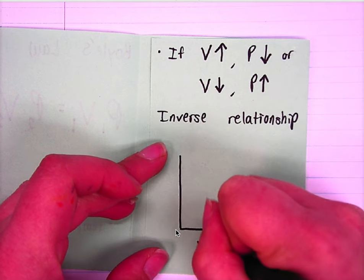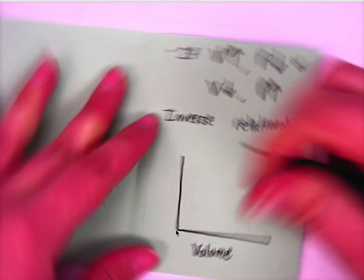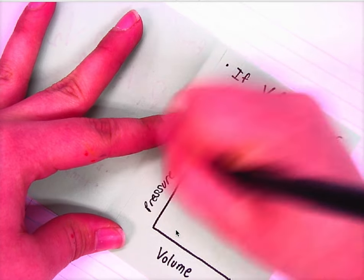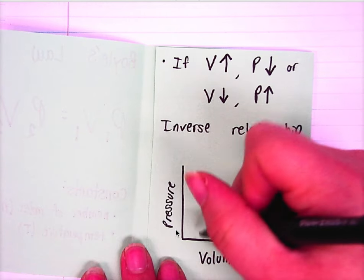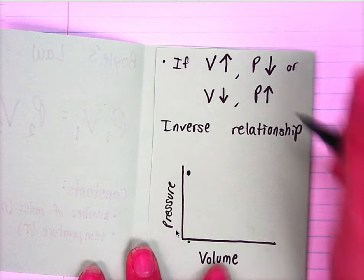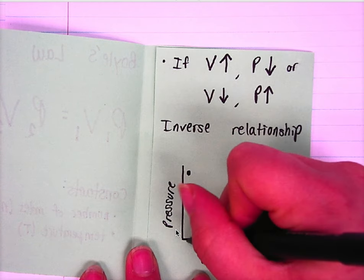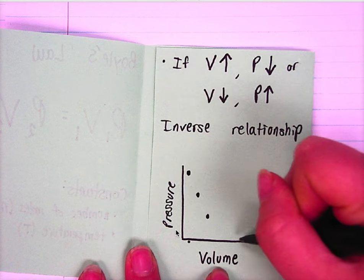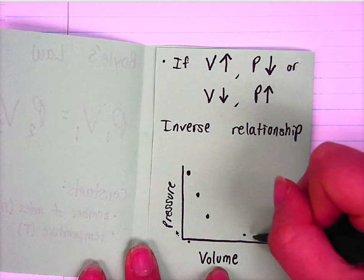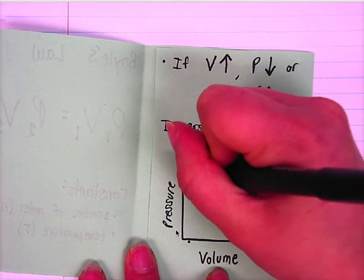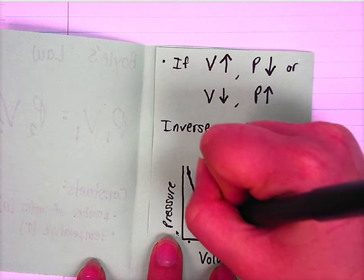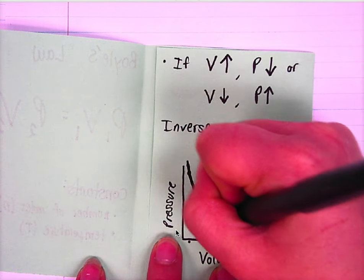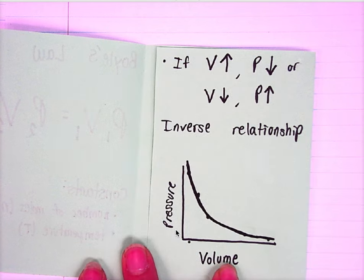If we were to graph it — you guys need to be able to recognize these graphs. At very low volumes, we're going to have high pressure. As you have a little bit bigger volume, the pressure is going to decrease. And then as you get to bigger volumes, it's going to even out. So it's this kind of curve — that's what an inverse relationship looks like.